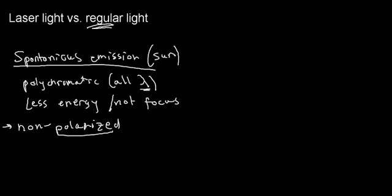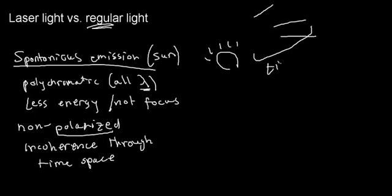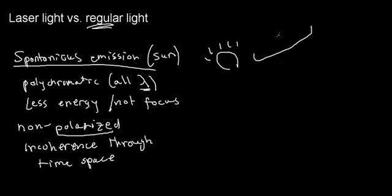The implication of not being polarized is that you are incoherent through time and space. What that really means is that if I shine a spontaneous emission and measure that emission over a specific distance — say 20 meters — it would be dispersed. It would not stay focused either over time or distance. Light is going to be dispersed throughout that distance. That's what we mean by coherence through time and space.